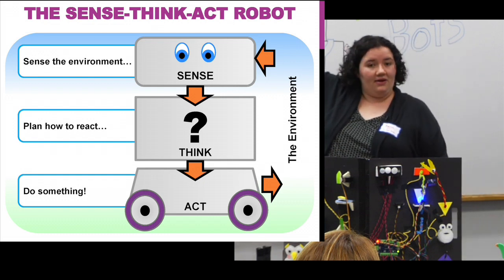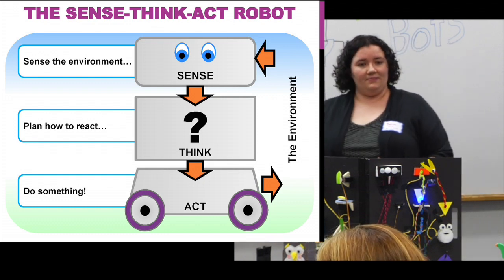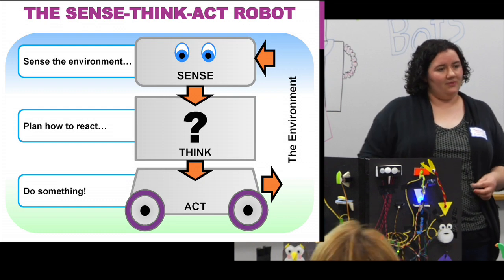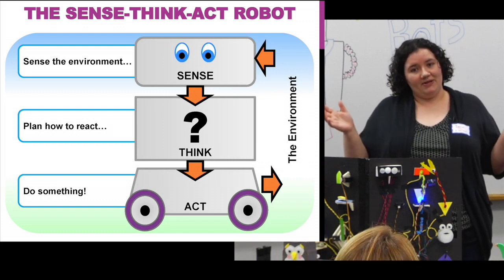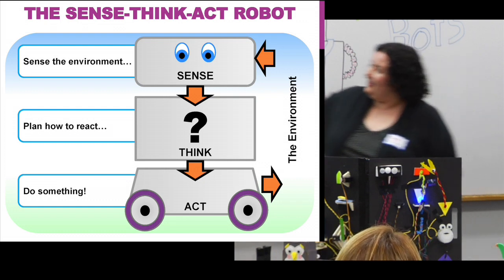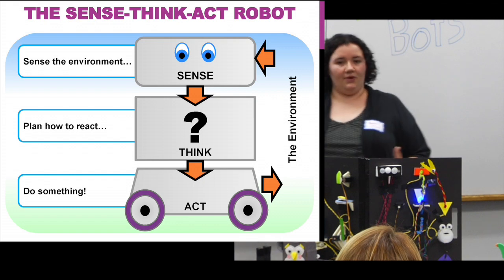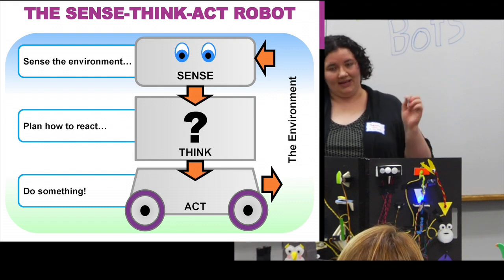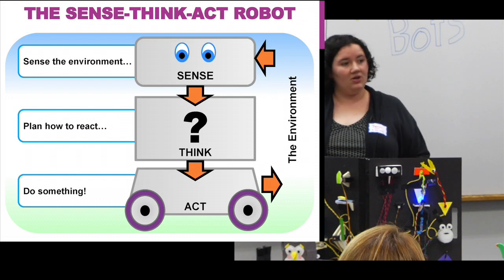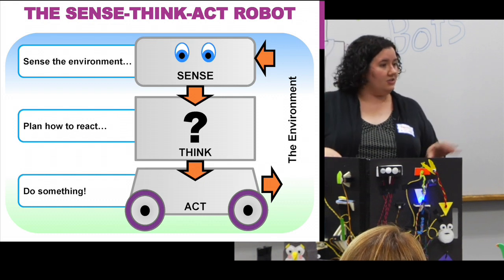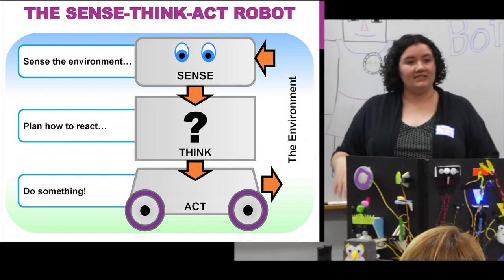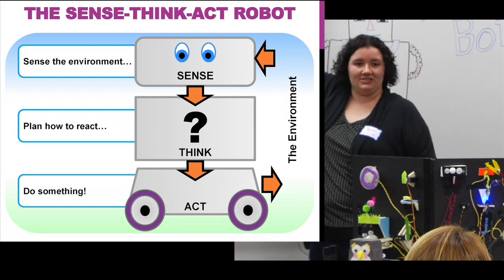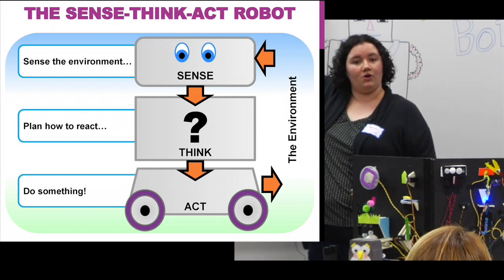Then it thinks about what it has sensed. For example, if you push a button, the robot says, 'What should I do now that my button's been pushed?' And then after deciding what to do, it performs an action. That might be a beep, make a sound, flash some lights, or actually move. There are lots of different actions the robot can have on the world.